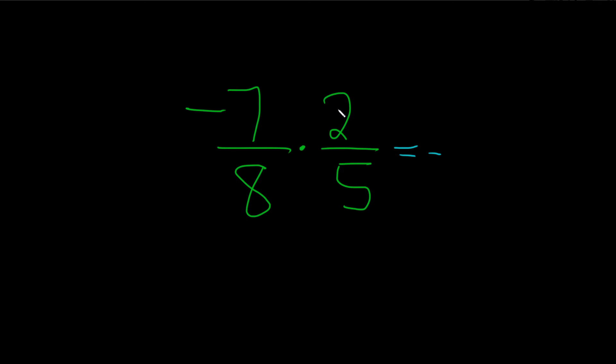So 2 goes into 2 one time, so you draw a line through it and you put a 1 like this. 2 goes into 8 four times, so you draw a line through it and you put a 4 like this.